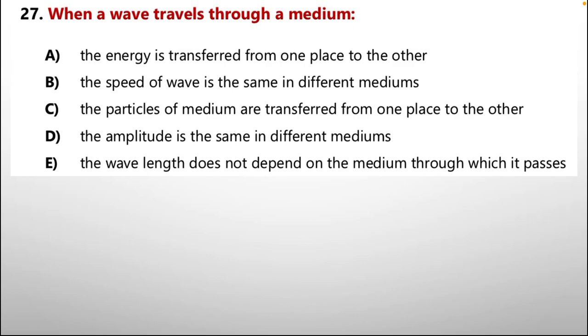Well, question number 27 is when a wave travels through a medium. Options are: A. The energy is transferred from one place to other. B. The speed of wave is the same in different mediums. C. The particles of a medium are transferred from one place to the other. D. The amplitude is the same in different mediums. E. The wavelength does not depend on the medium through which it passes.